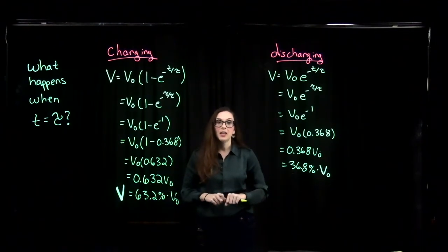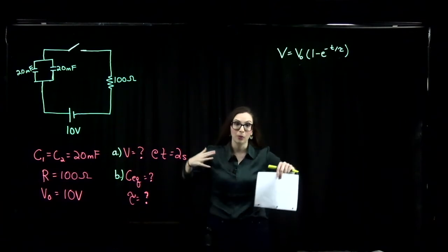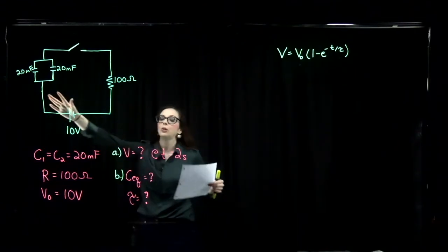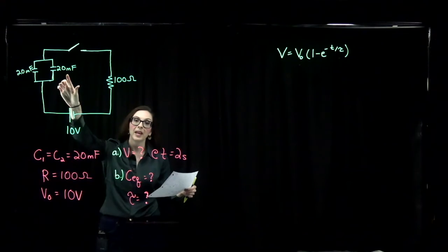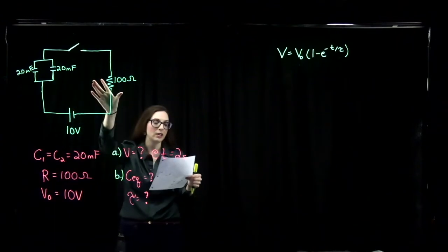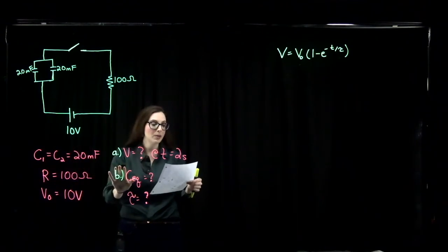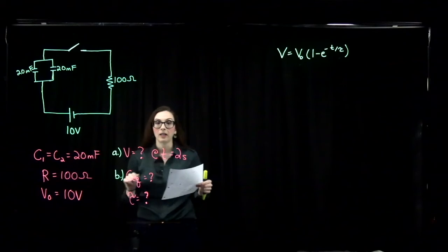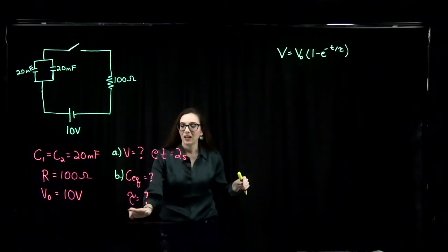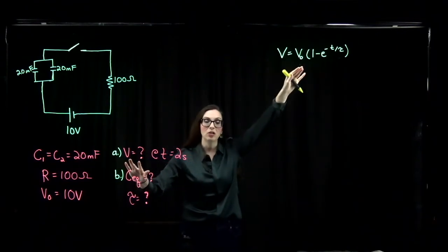We are going to solve a problem where we have two capacitors in parallel being charged within an RC circuit. We have two identical 20 millifarad capacitors connected in parallel, in series with a 100 ohm resistor and a 10 volt power source. The question asks: what is the potential across the capacitors at two seconds after the switch is closed? To find this we also need the total capacitance and the characteristic time constant tau.